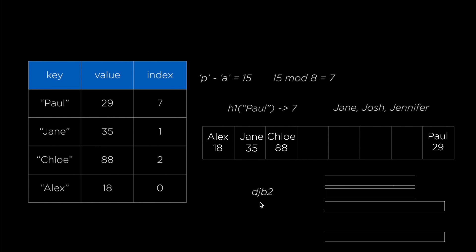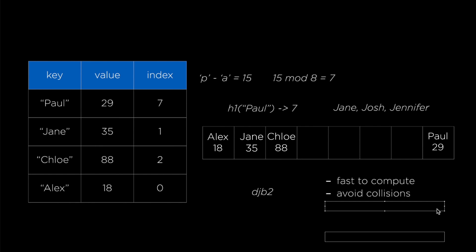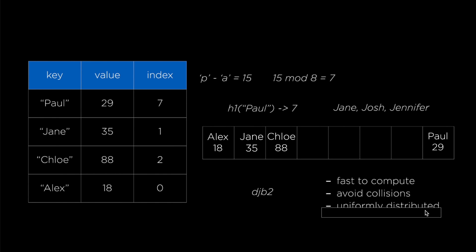One way to deal with that problem would be to consider most or all of the letters in the given key. One such function is called djb2 — I'm going to put a link to some information about that in the description. When choosing a hash function for your hash table, there are a few things to consider: one is that it should be fast to compute, and the other is that it should try to avoid collisions as much as possible. In some textbooks they might say your hash function should be uniformly distributed or random-looking, but it's really not necessary for practical purposes and not necessarily better than non-uniformly distributed functions. So you should really only consider those two criteria.